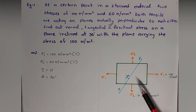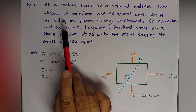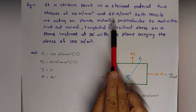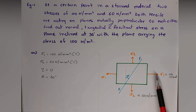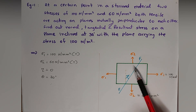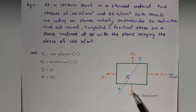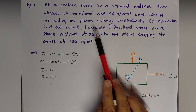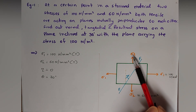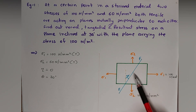In this strained material, the two stresses — σ₁ = 100 N/mm² and σ₂ = 60 N/mm² — are both tensile, meaning both act outwards. σ₁ is acting outwards and σ₂ is also acting outwards. Both are tensile, acting on planes mutually perpendicular to each other, i.e., both planes are at 90 degrees.